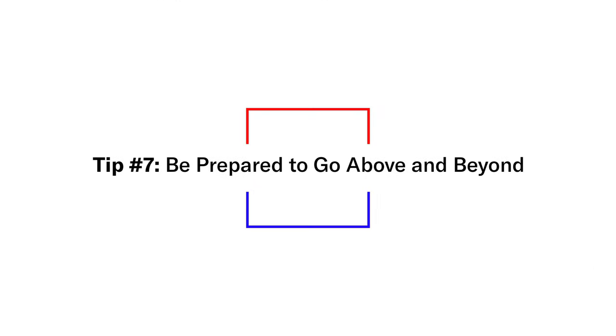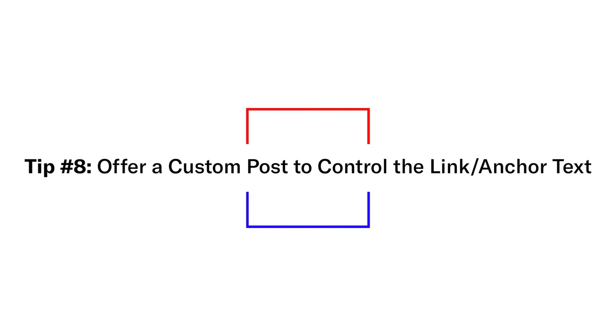The last tip is to be prepared to go above and beyond for your prospect. A lot of the time they'll ask for things like embed codes, or ask you to cut your infographic up into posts. Be prepared for that — you want to make it as easy as possible for them to link. You might even consider offering to write a custom post for them, which is a great way to control the anchor text and the links included. One thing to avoid: if they ask for a reciprocal link, that's something Google doesn't like and it won't benefit either of you. Try to make it as easy and turnkey as possible for them.